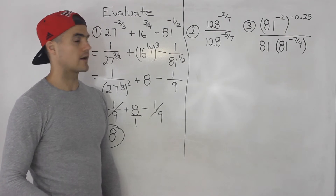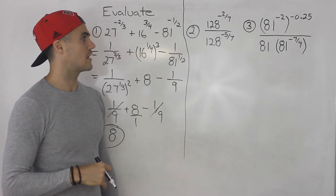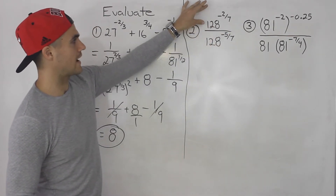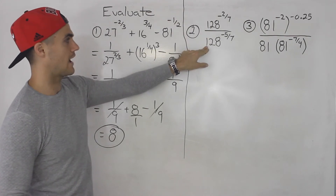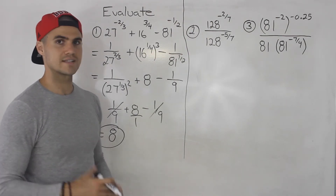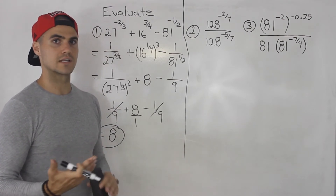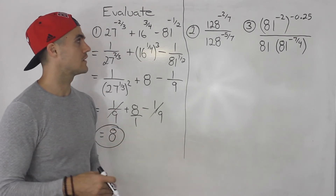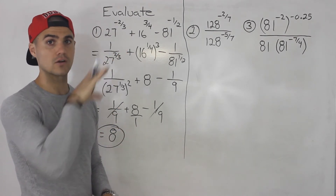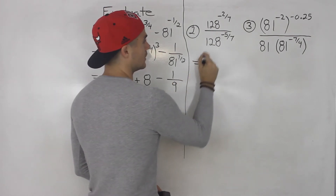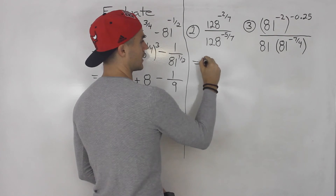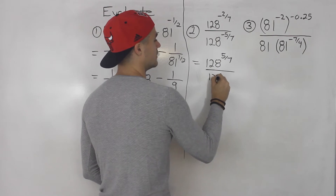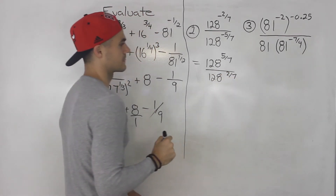Moving on to number 2, we have 128 to the power of negative 2 over 7 divided by 128 to the power of negative 5 over 7. We have this big fraction where both the numerator and denominator have negative exponents. Whenever I see negative exponents in a fraction, I like to bring them over — negative exponents in the denominator go to the numerator as positive, and negative exponents in the numerator go to the denominator. So we'll have 128 to the power of positive 5 over 7, over 128 to the power of positive 2 over 7.